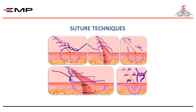Why is wound closure important? Wound closure is important because it is always important to close dead space. Wound closure supports and strengthens the wound's edges until healing increases the tensile strength. Also, wound closure is important to minimize the risks of bleeding and infection. A proper suturing technique is needed to ensure good results.